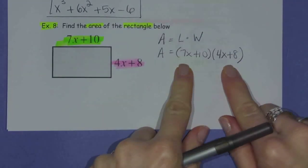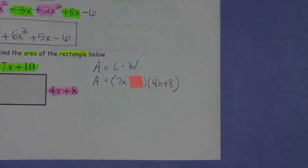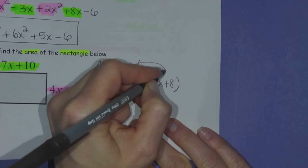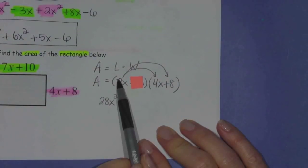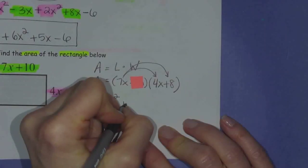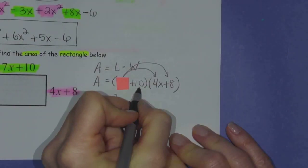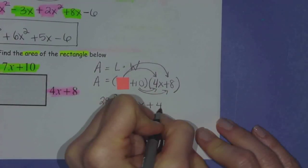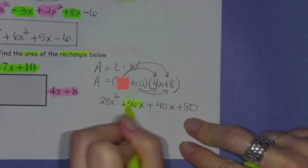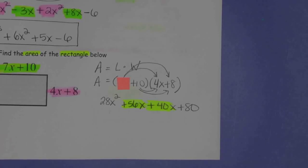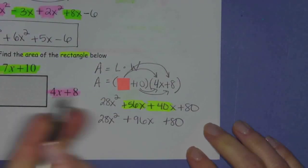Now we know how to multiply binomials. Using my cover technique, cover up that 10 and distribute. 7x times 4x is 28x squared, and 7x times 8 is positive 56x. Then distribute the positive 10: 10 times 4x is positive 40x, and 10 times 8 is 80. Combining like terms — 56x and 40x — we get 28x squared plus 96x plus 80. This is the area.